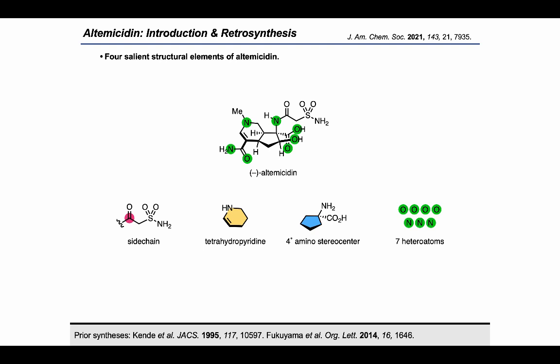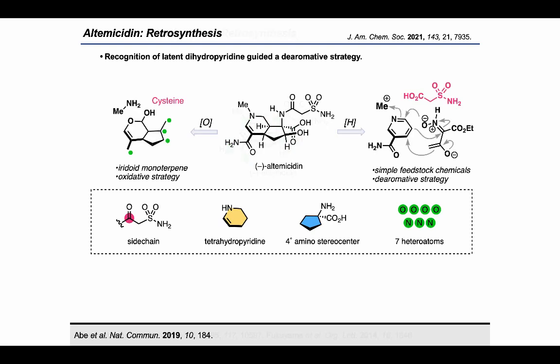To date, the enzymatic origins of altemicidin remain unverified with the exception of the sulfonamide side chain, which Abe and coworkers showed originates from cysteine. While we suspect that an iridoid-like monoterpene is likely the source of the 10-carbon core, we were compelled to use simple feedstock chemicals in a net reductive dearomative assembly of altemicidin rather than a nature-inspired oxidative approach.